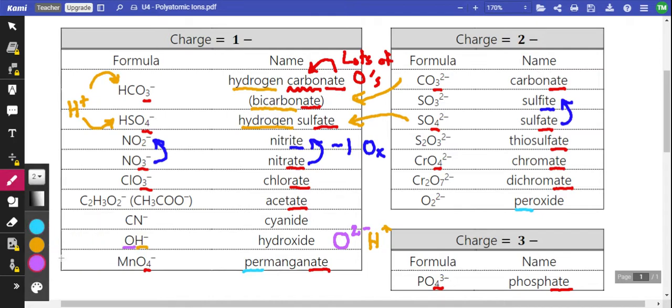So peroxide, if you kind of like with the hydroxide one, kind of ignore the per part for a second. It's just oxide, kind of like oxygen as an ion. This is O with a negative 2 charge.